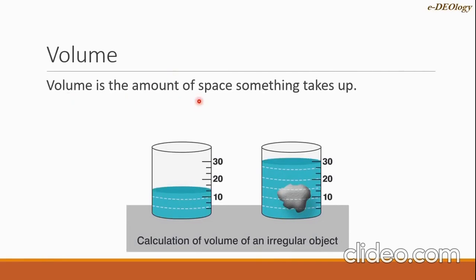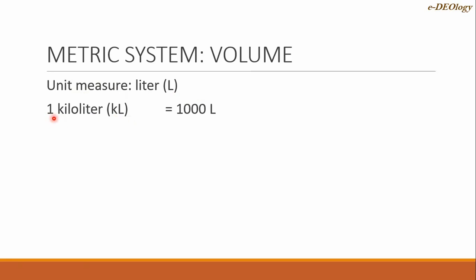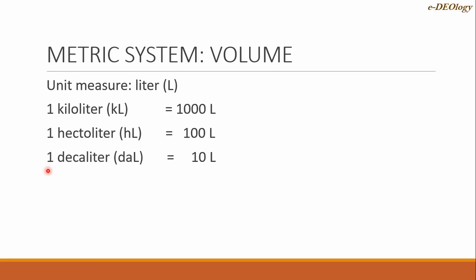The next topic is volume or capacity. Volume is the amount of space something takes up. For the metric system, the unit of volume is the liter, symbolized by capital L. The first unit is kiloliter, symbol KL — one kiloliter equals 1,000 liters. The next is decaliter, symbol DAL — one decaliter equals 10 liters.